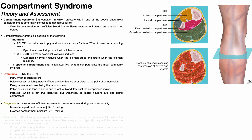Paresthesias — and numbness is not technically a paresthesia since it's the absence of sensation, but it is the most common sensory change that people exhibit with compartment syndrome. Pallor, or pale skin tone: because you are compressing the blood vessels, there is insufficient blood flow, so the skin in that area is going to get lighter.